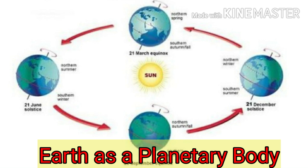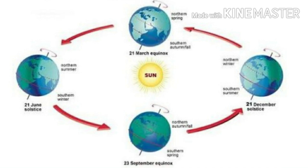The Earth is revolving on its own axis around the Sun in a definite path, also called an orbit. An orbit is nothing but the path around the Sun. The Earth is moving around the Sun on its own axis in a definite orbit.